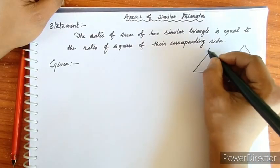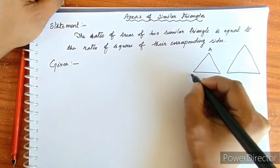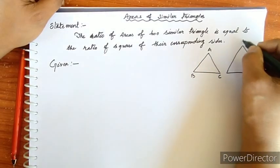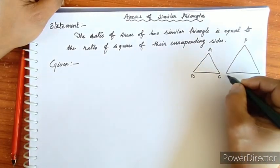Similar triangles ABC and PQR are given.